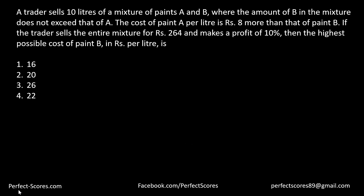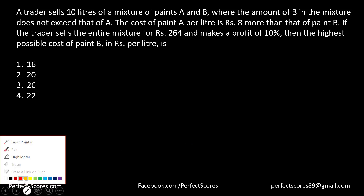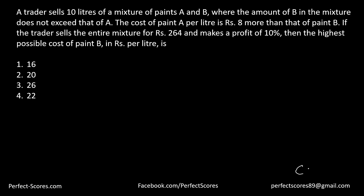Hey, welcome to this video. My name is Pushpinder Gill and in this question we are going to solve a CAT 2018 problem. A trader sells 10 liters of mixture of A and B, where the amount of B does not exceed A. There is a cost involved and the entire mixture sells for 264, so this looks like a word problem involving cost and profit.